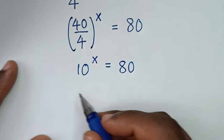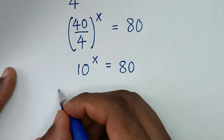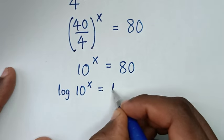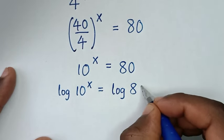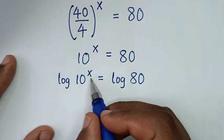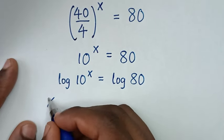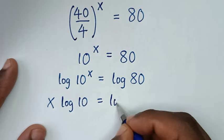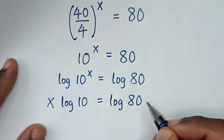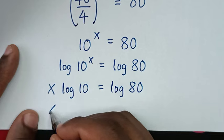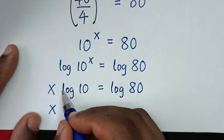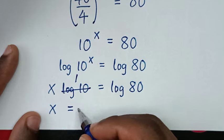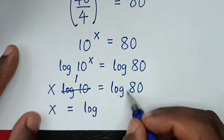Then from here, we will apply log to both sides, so it will be log of 10 power of x is equal to log of 80. The power of x moves to the front, giving x times log of 10 is equal to log of 80. Since log of 10 is 1, we get x is equal to log of 80.